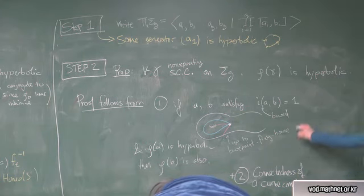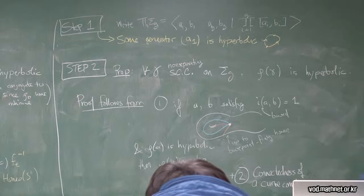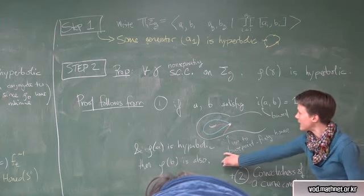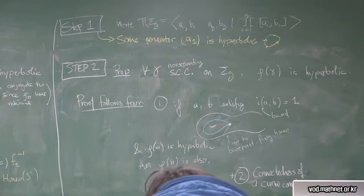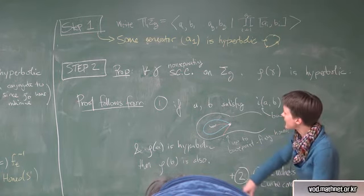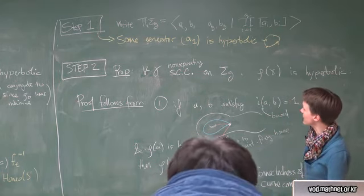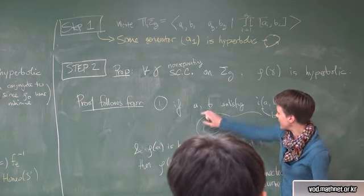So, if you study mapping class groups, this is sort of a standard modification of the types of arguments that you show to say the usual curve complex is connected, or the pants complex is connected, or the arc complex is connected. So, I won't prove that, but I won't prove this because it's another, if you're rigid, then this happens. So, for now, it's a standing assumption that my action is rigid and minimal. And this is what we'll conclude.